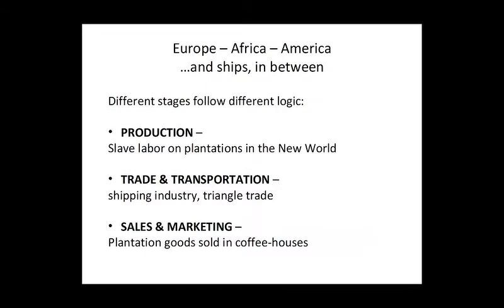The three different stages of this Atlantic system that I mentioned are in fact differently far along on the progression from the traditional order to a capitalist order. The production system of slave labor on plantations in the New World functions by a different logic than trade and transportation — this triangle trade between Europe, Africa, and America. And finally, the sales, marketing, and distribution all follow a different logic, all tied to different extents into this story of the making of capitalism and modernity. So let's take this apart by looking at each stage individually.